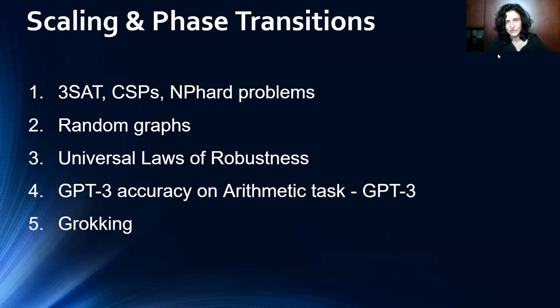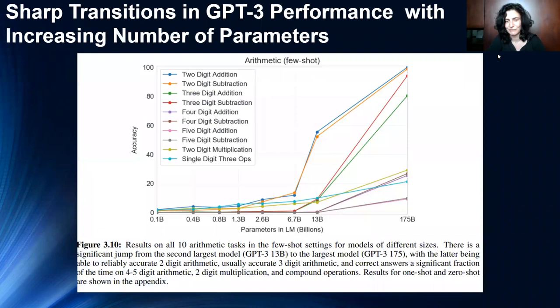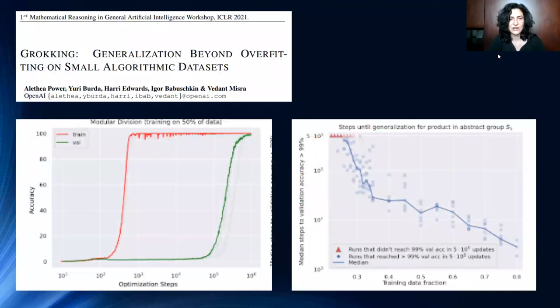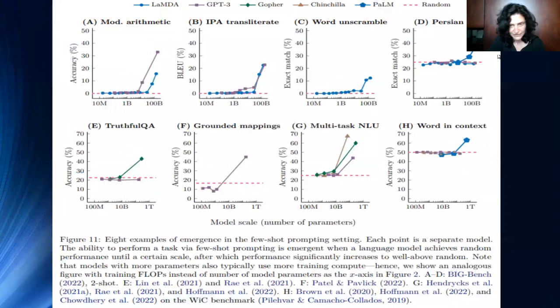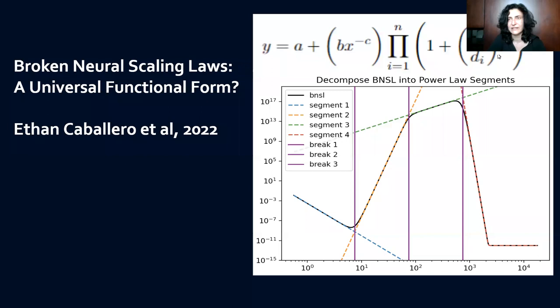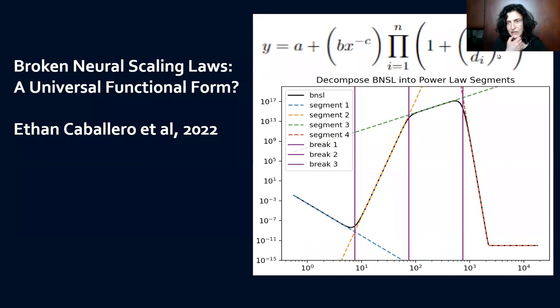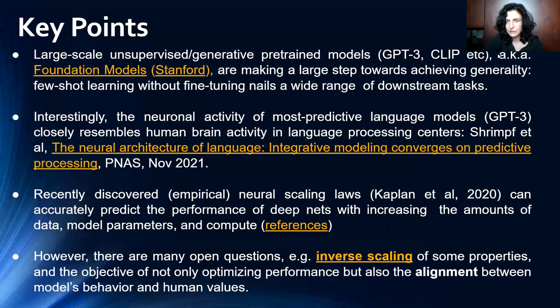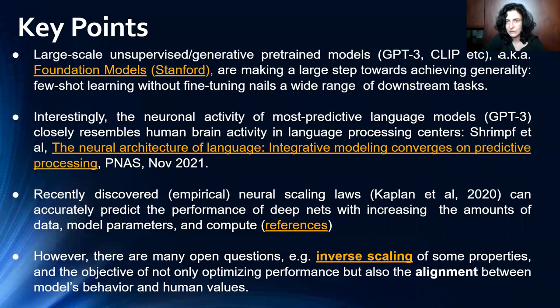Beyond scaling laws, there are much more interesting phenomena happening now — phase transitions and abrupt changes in performance at scale that are not well understood. These are found in various different tasks and models when compute, data, or model size increases. Our recent work tries to capture a more generic, universal family of scaling laws that can account for inflection points, transitions, and potentially non-monotonic behavior. Understanding what's going on mechanistically remains lacking and is a major open question.